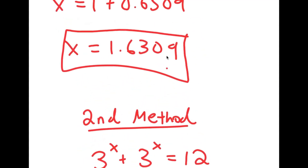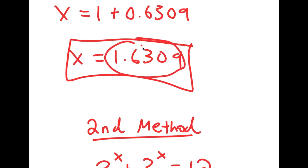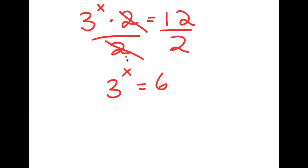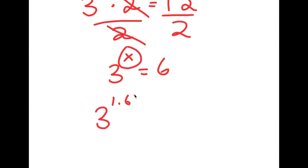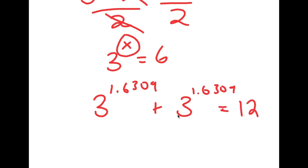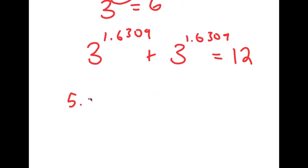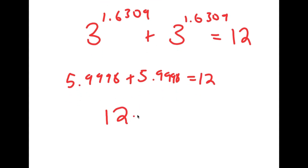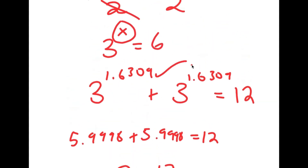I got x is equal to 1.6309. Now I'm going to plug this back into the original equation. So I get 3 to the power of 1.6309 plus 3 to the power of 1.6309 is equal to 12. And 3 to the power of 1.6309 is 5.9998. Adding these two together, I get approximately 12, so I get 12 equals 12. Because this checks out, I know my solution is correct.